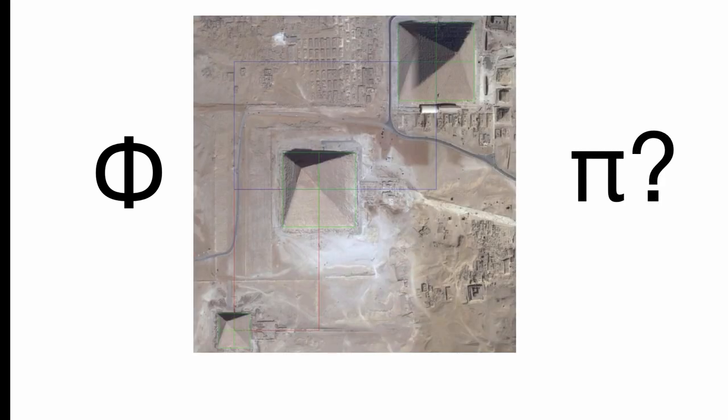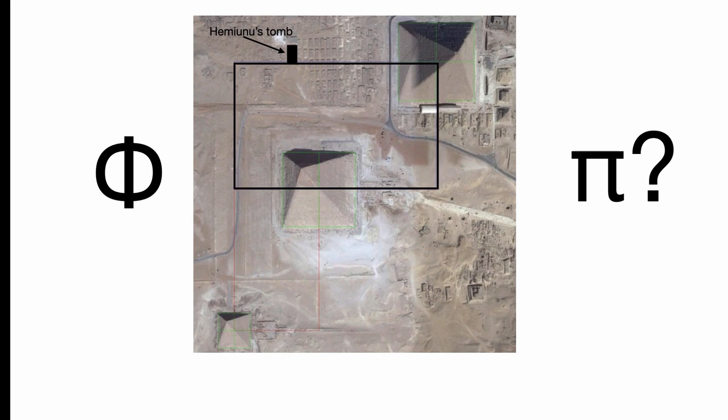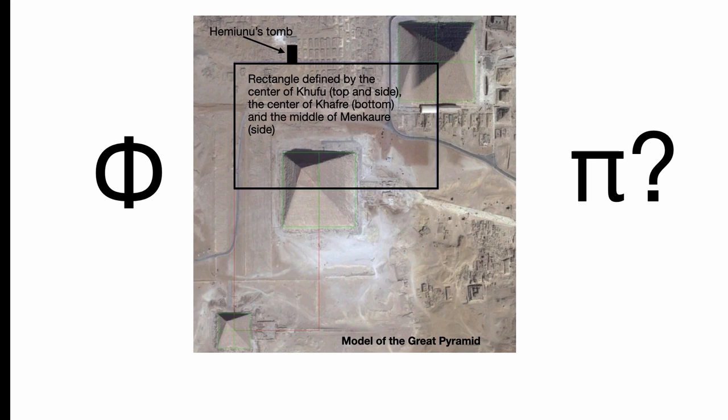Phi and Pi are interesting Greek letters that refer to constants, and Phi is often talked about in relationship to the Great Pyramid in Giza. So here is Hemayuna's tomb, the architect of the Great Pyramid. If we go along the southern border of his tomb and make this rectangle, we can find that it's defined by the center of Khufu and by the center of Kafri, and the middle of Menkara is its side.